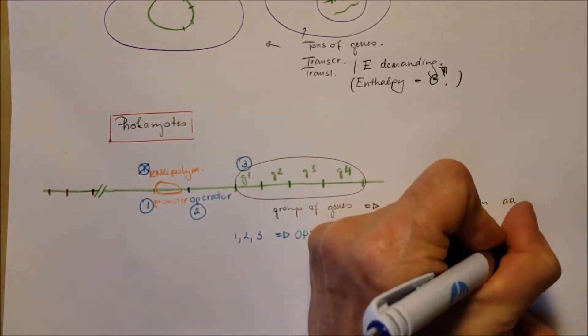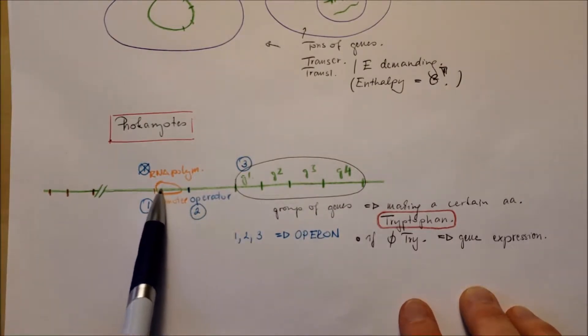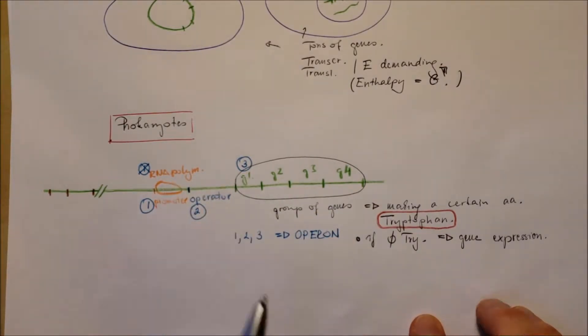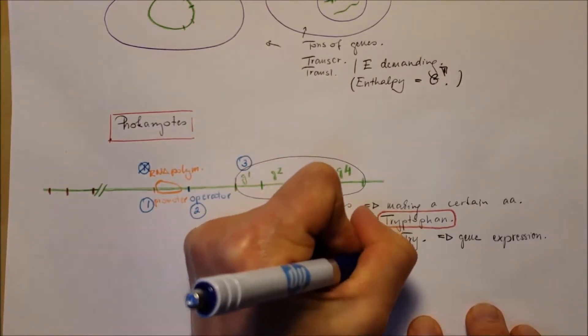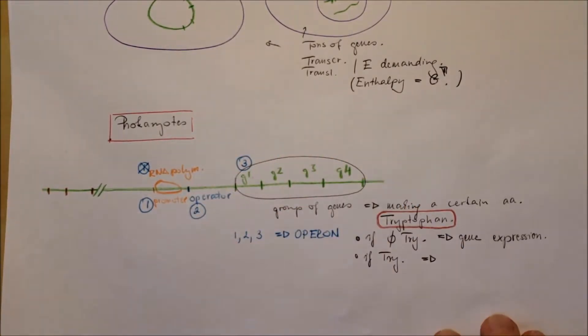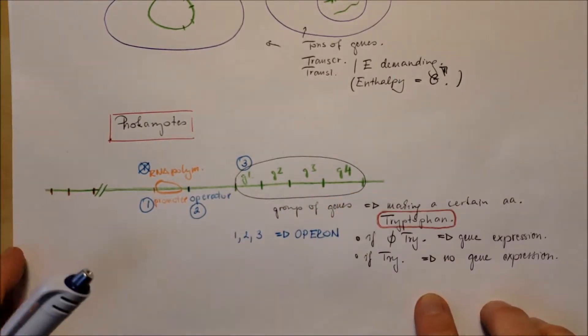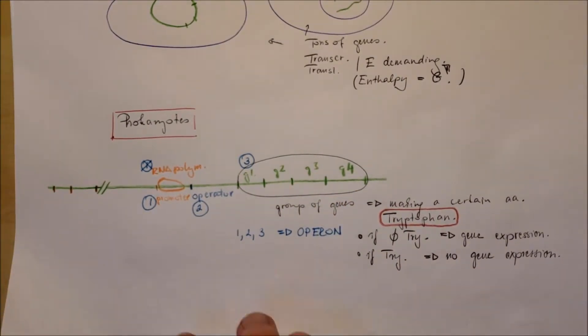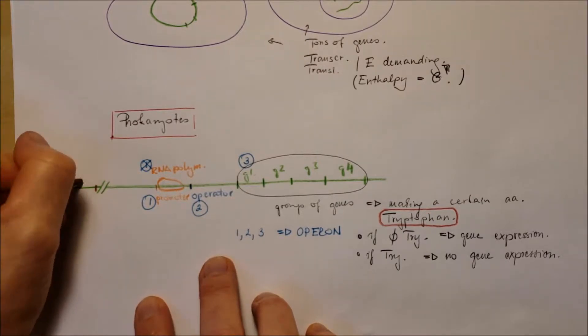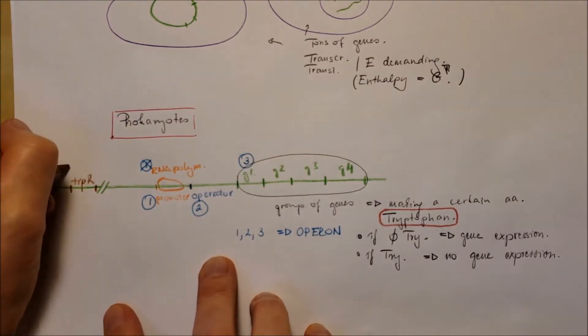The operon has a special purpose in this case to produce a certain amino acid. If tryptophan is not present in the surroundings, the gene will get expressed, enzymes will be produced and tryptophan will be produced. If tryptophan is present in the surroundings, on the other hand, no gene expression. Why waste energy to make enzymes when the bacteria can pick up the tryptophan from the surroundings?